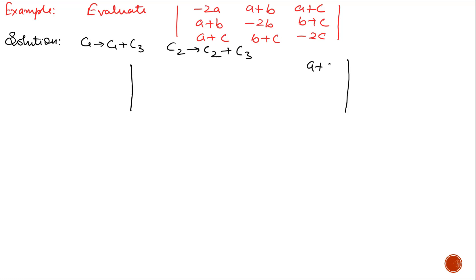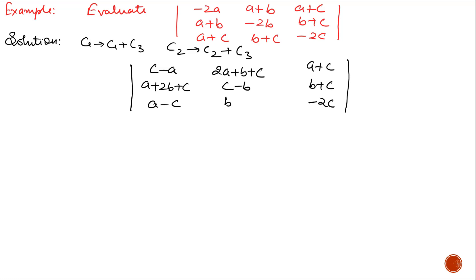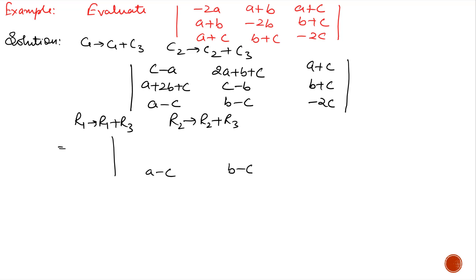There is no change in the third column. In the first column we will get (c-a), (a+2b+c), and (a-c). In the second column we will get (2a+b+c), (c-b), and (b-c). Now we will use operations r1 replaced by r1 + r3 and r2 replaced by r2 + r3. There is no change in the third row. In the first row we will get 0, 2(a+b), and (a-c).